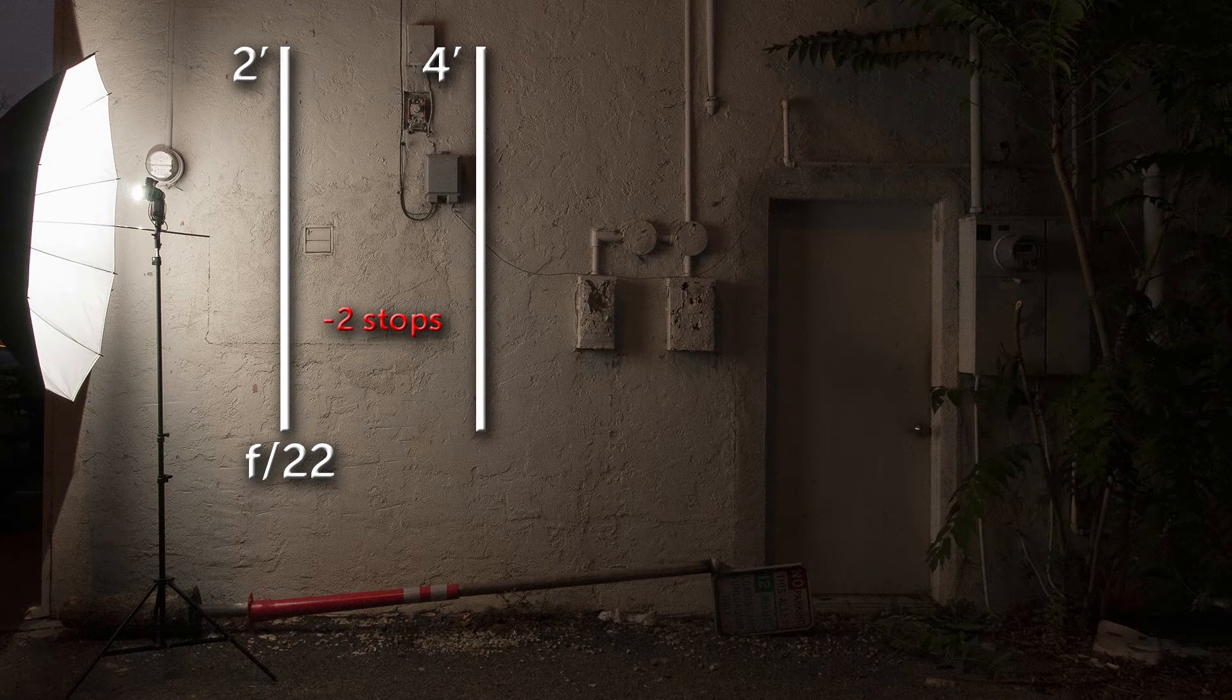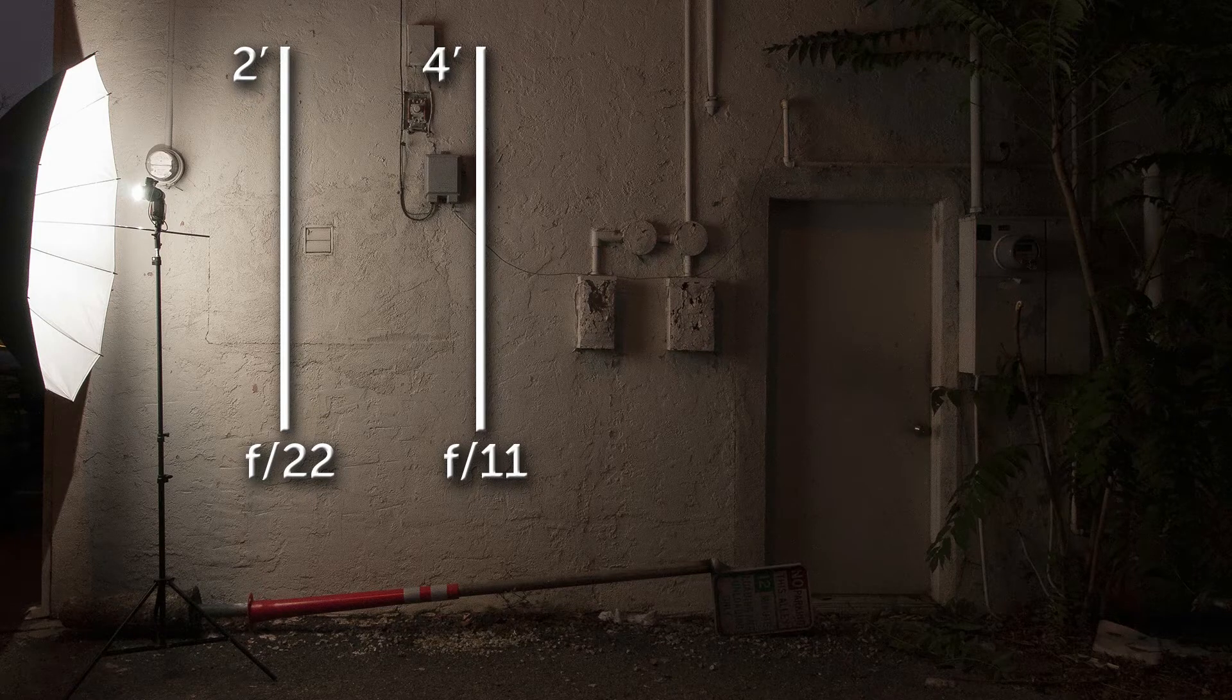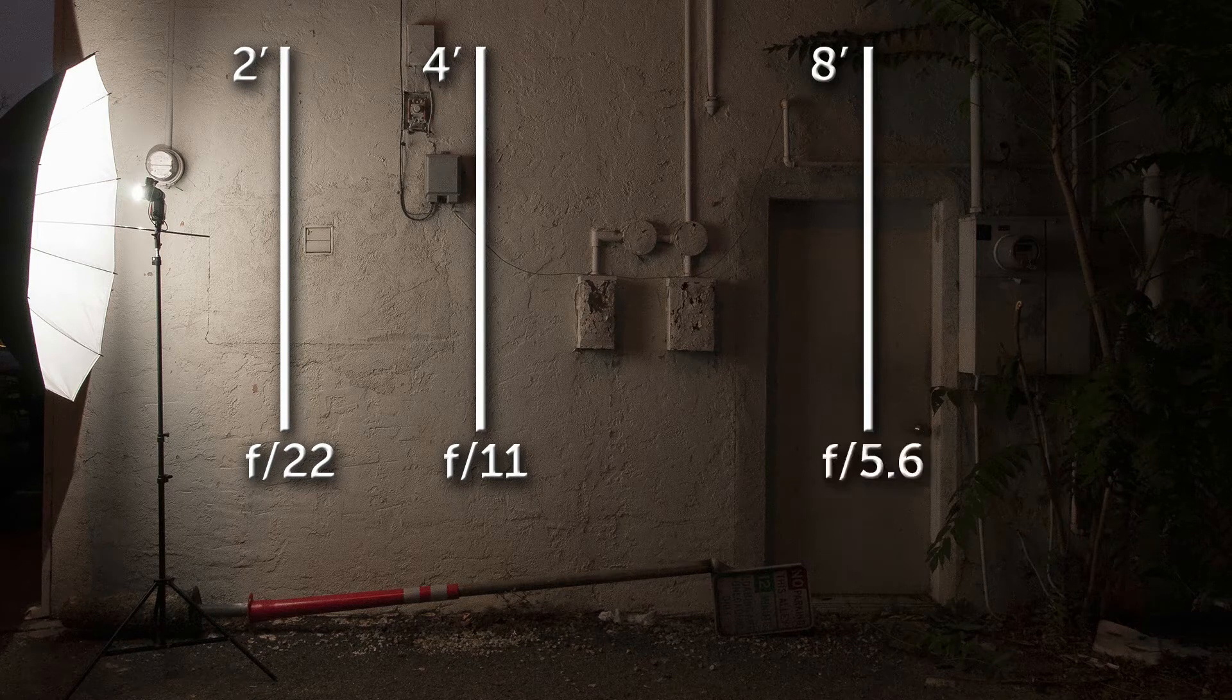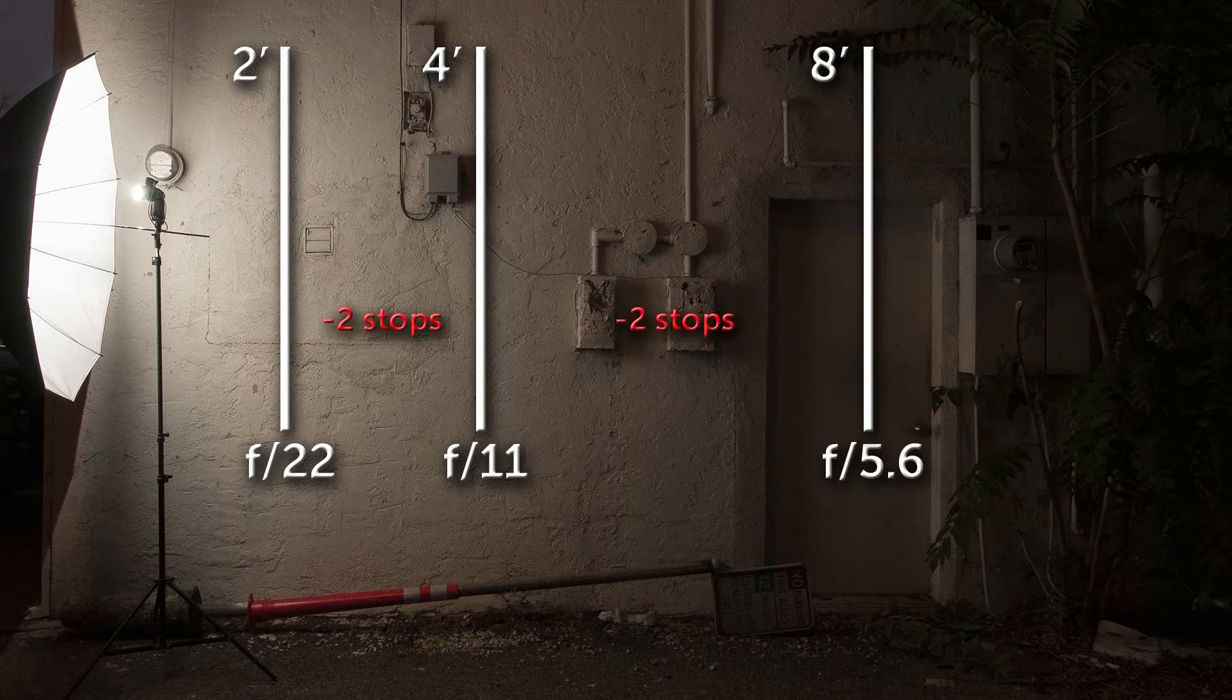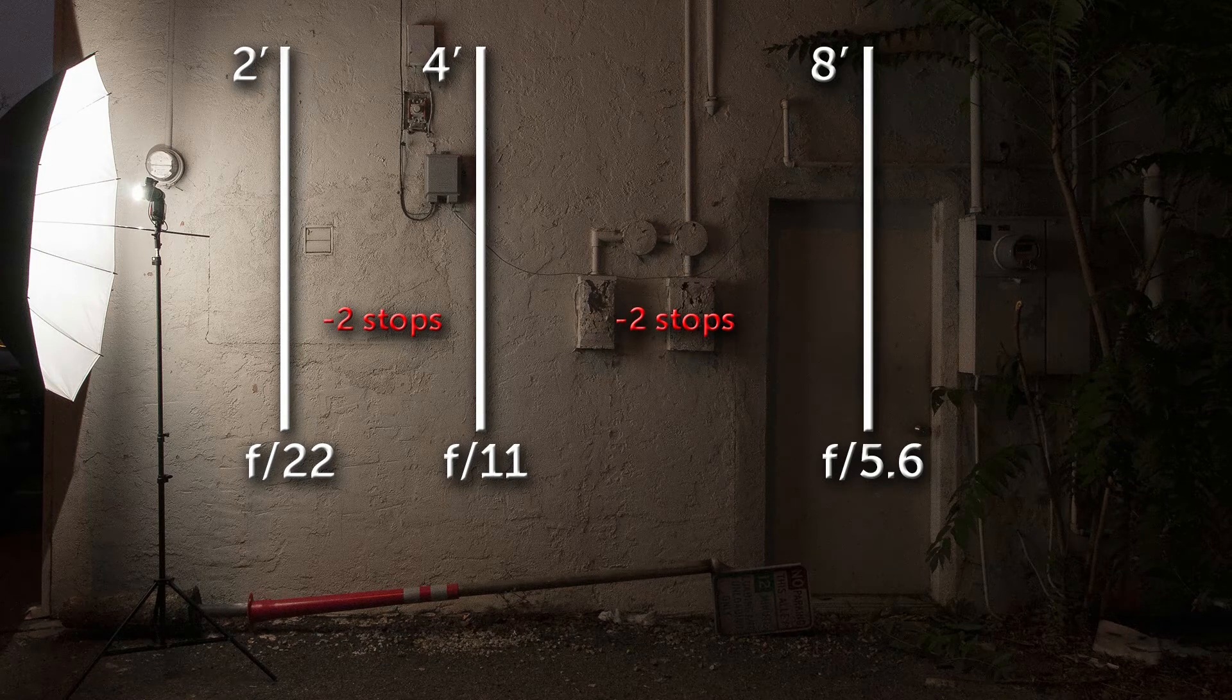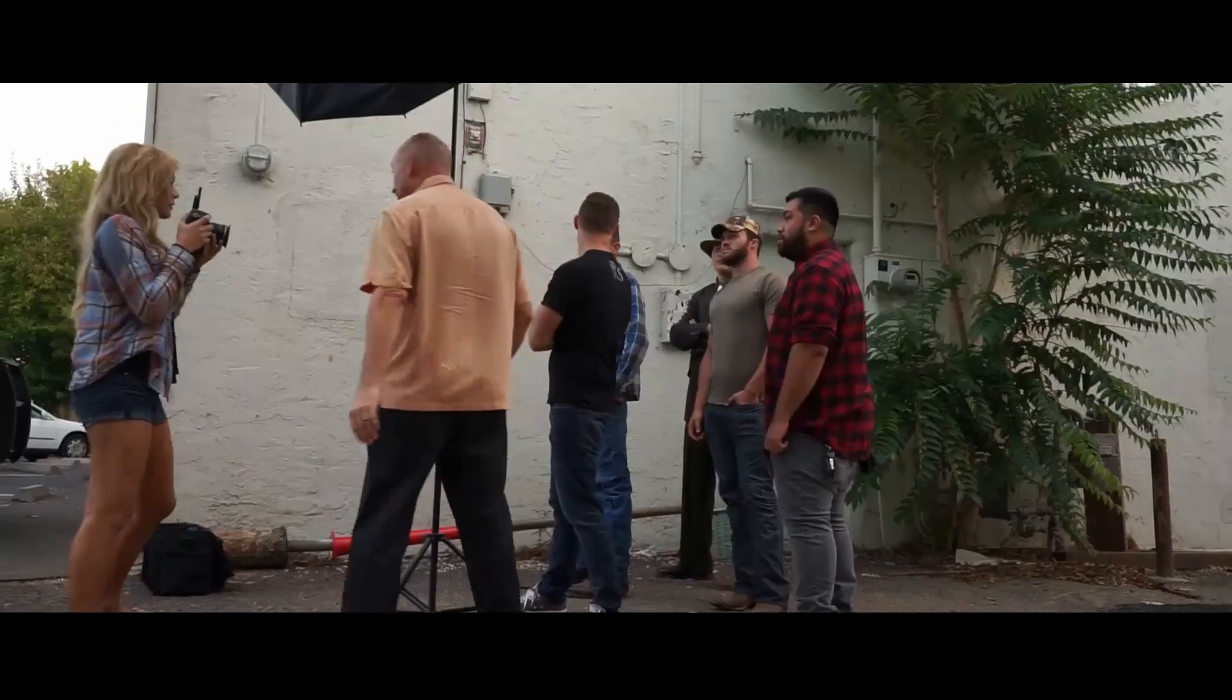Let's double it again to eight feet, and now our camera would need to be set at f5.6, again two stops less than it was at four feet. What I want you to notice is the distance between stops of light is getting larger.